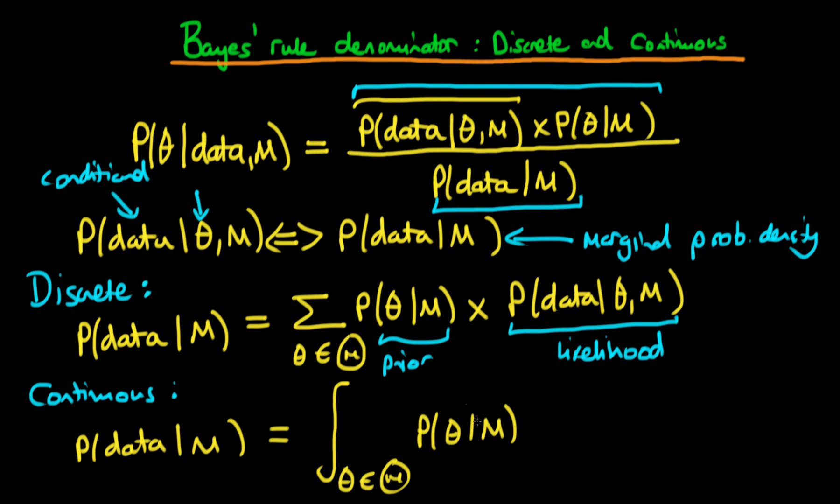So now our prior is a continuous PDF as opposed to before where it's kind of like a probability mass function times the probability of our data given our choice of theta and given our model choice. In other words our likelihood and now we're just integrating over all choice of theta.